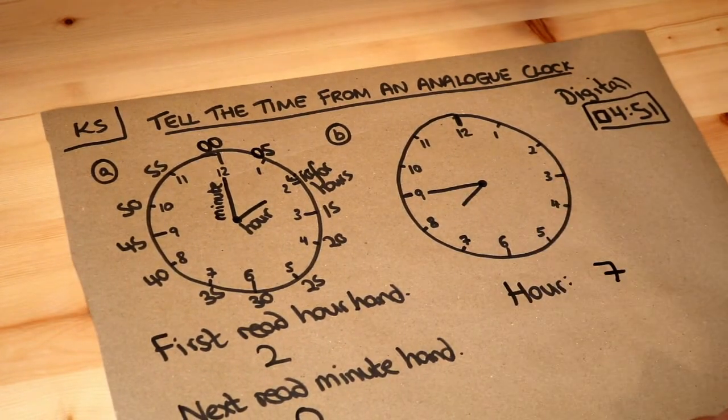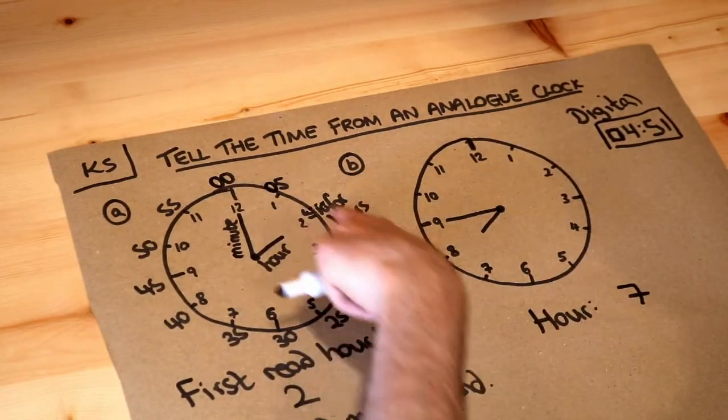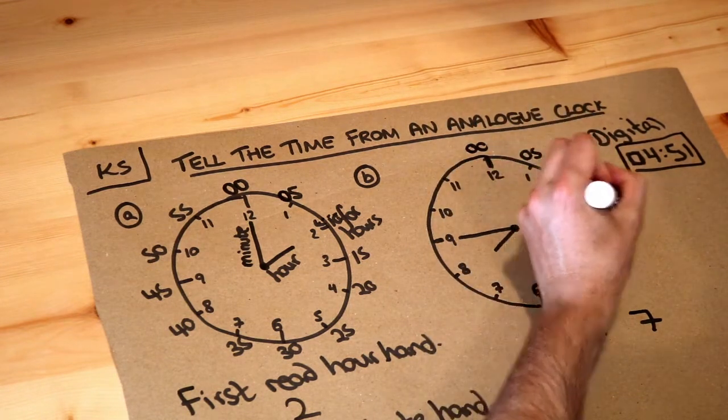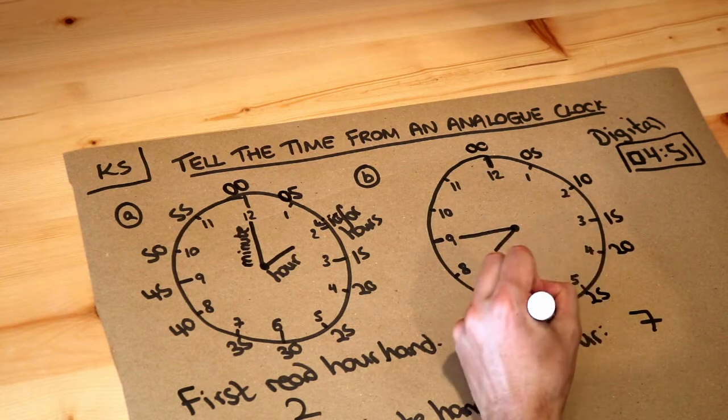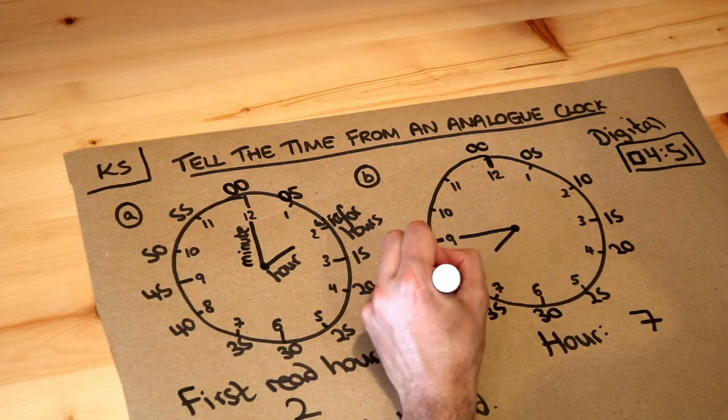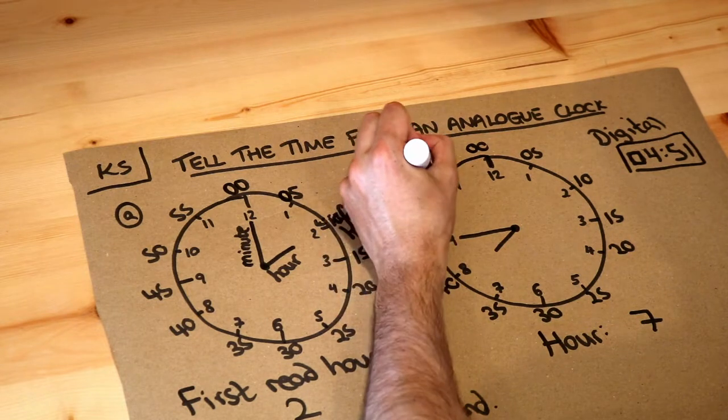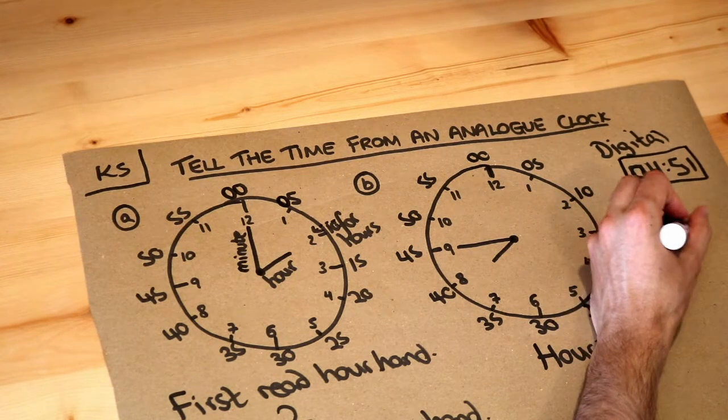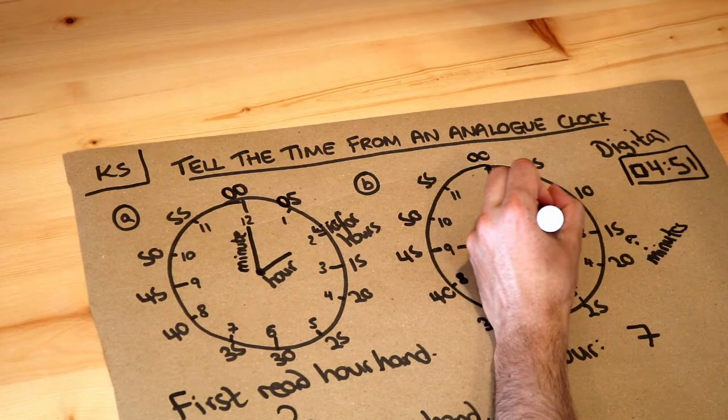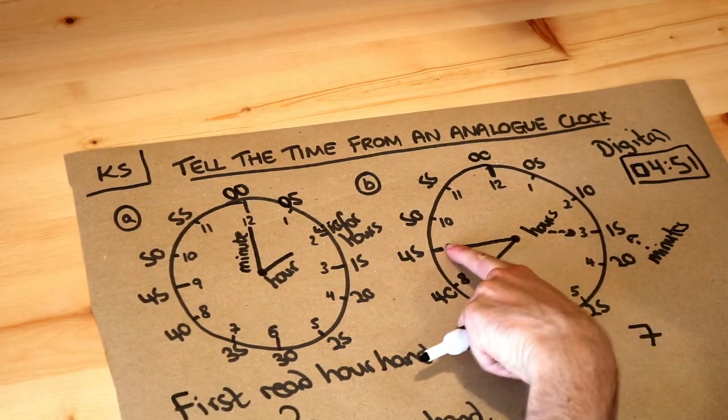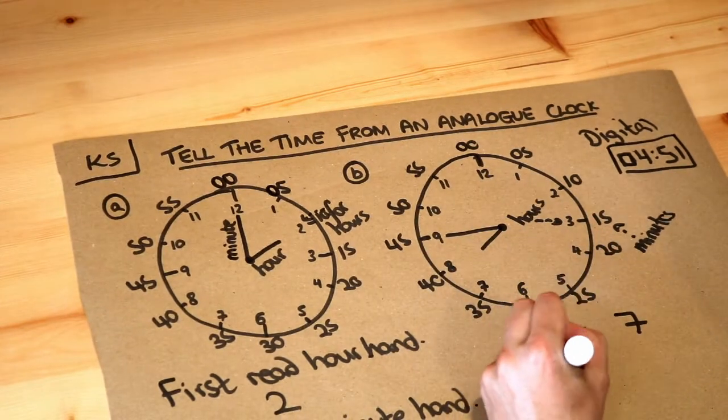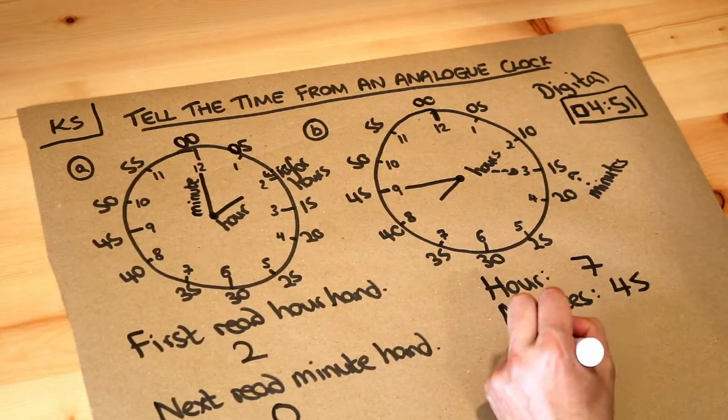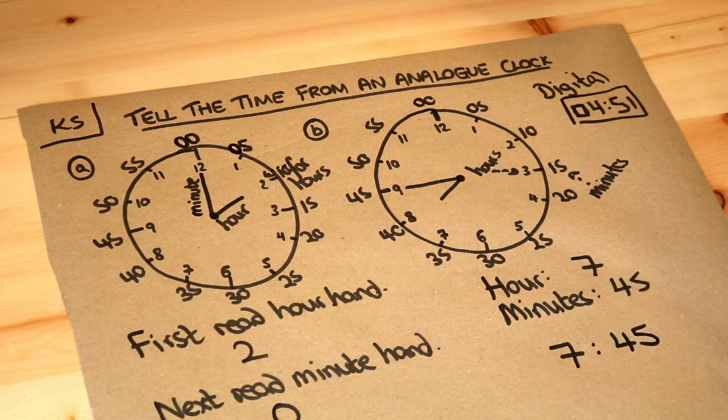So the hour is 7, and then I'm going to write these numbers around the outside for the minutes. That's 00 minutes, 05, going up in 5s each time: 10, 15, 20, 25, 30, 35, 40, 45, 50, 55. So we can see on the minutes numbers—remember these are the minutes numbers and the inner numbers are the hour numbers—that the longer hand, the minute hand, is pointing at the 45. So the number of minutes is 45.